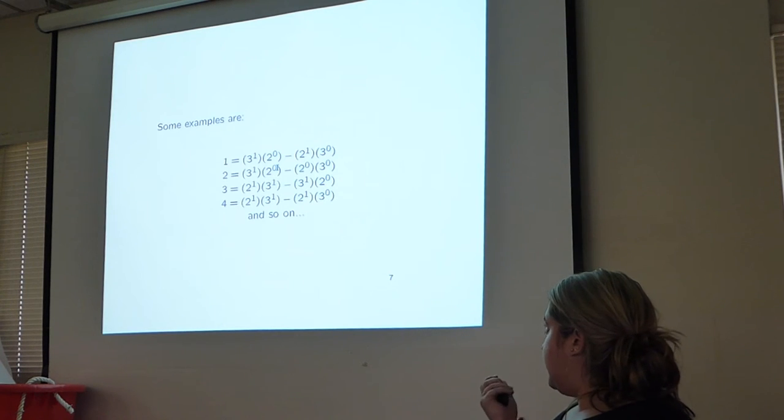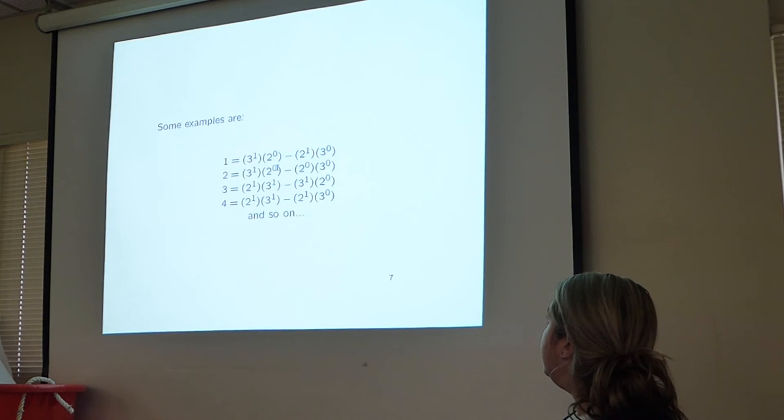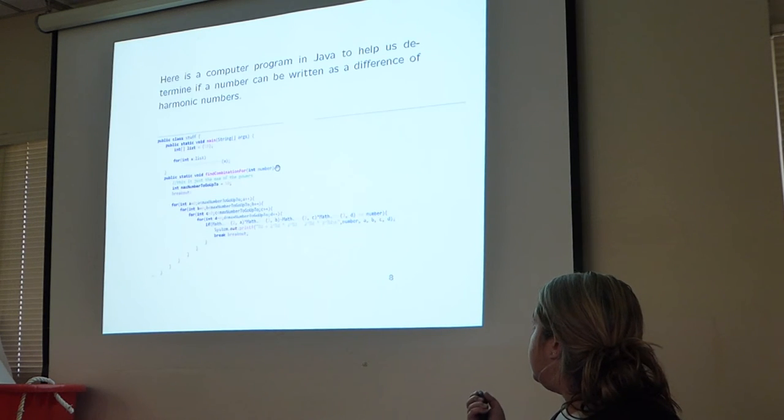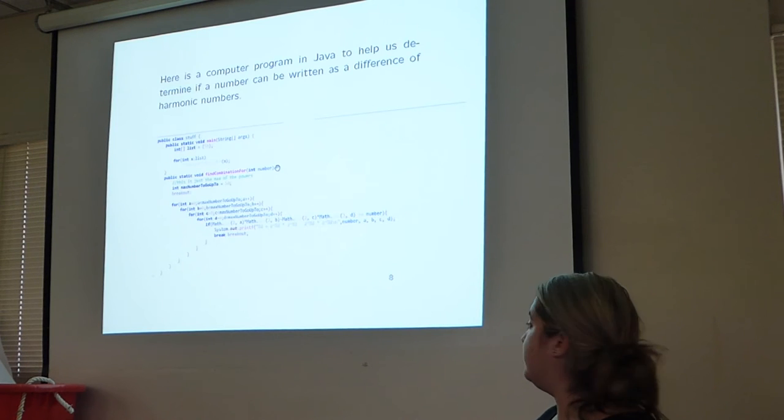Here's some examples: of course we already knew 1, and then we went on 2, 3, 4, and so on, and we went all the way up to 100. As we got up to higher numbers, like 80, 90, and such, it just became super tedious to find a combination of difference of harmonic numbers. So this just helped us, a Java program.